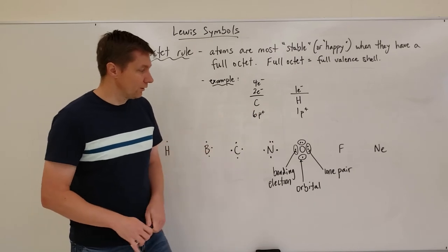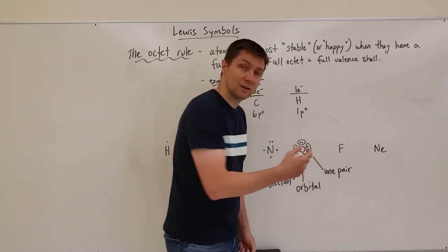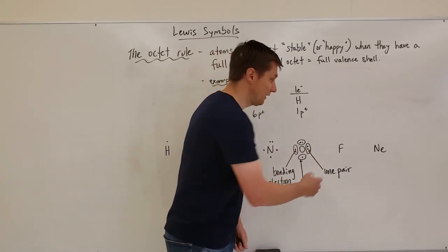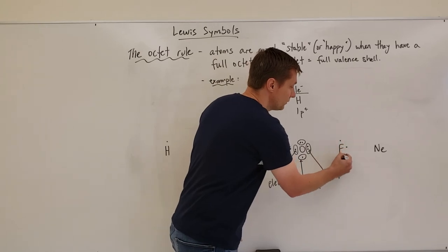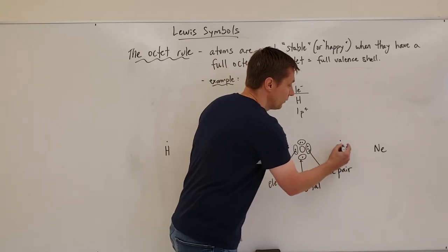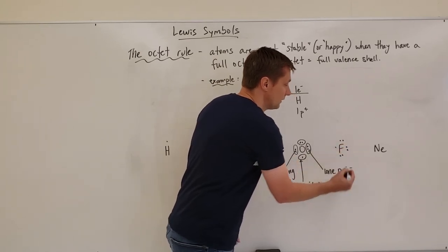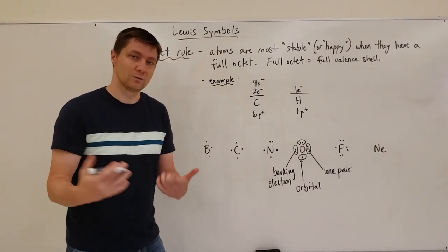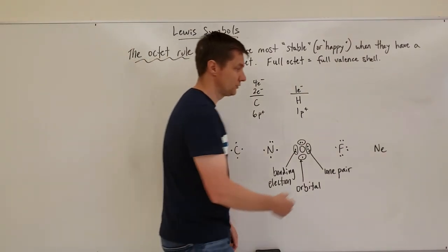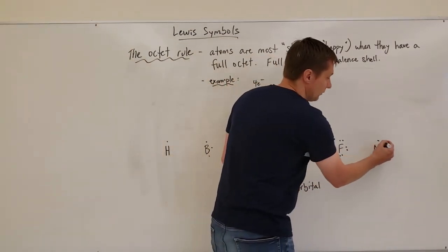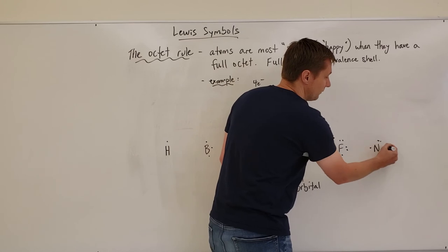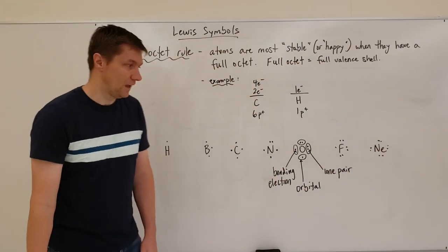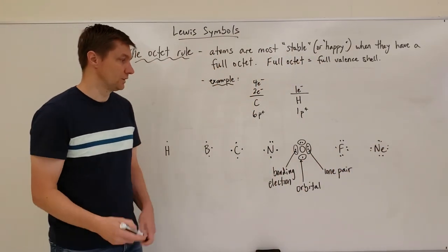For fluorine, which is in group seven with seven valence electrons, we go one, two, three, four, five, six, seven. And neon is in group eight with eight electrons, so: one, two, three, four, five, six, seven, eight. You can draw these fairly quickly once you practice.